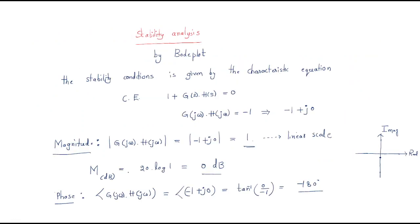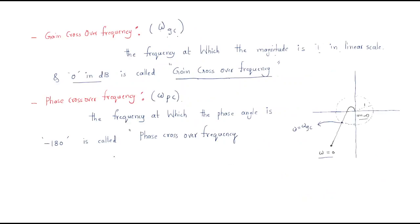The phase crossover frequency: from the characteristic equation the phase value is minus 180 degrees. So the phase crossover frequency, ω_pc, is the frequency at which the phase angle is minus 180 degrees. On the phase plot, as frequency varies from plus 90 to minus 90 to minus 180 degrees, the frequency at which it touches minus 180 degrees is called the phase crossover frequency.